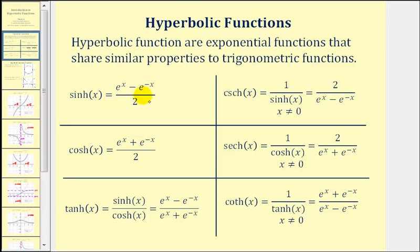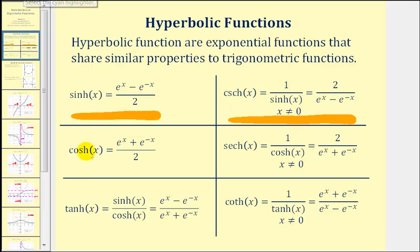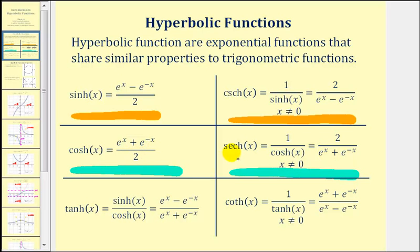Notice how if we compare the hyperbolic sine function and the hyperbolic cosecant function, they are reciprocals of one another, just like the sine and cosecant trig functions. And the hyperbolic cosine function and the hyperbolic secant function are also reciprocals of one another, just like the cosine and secant trig function values.